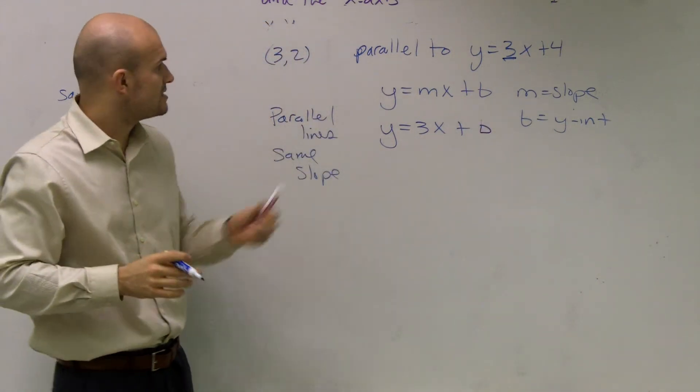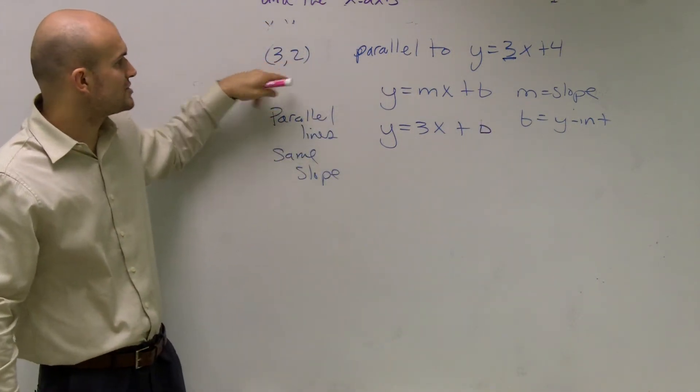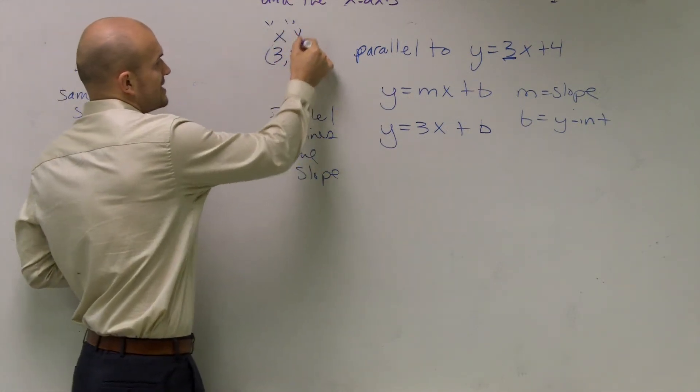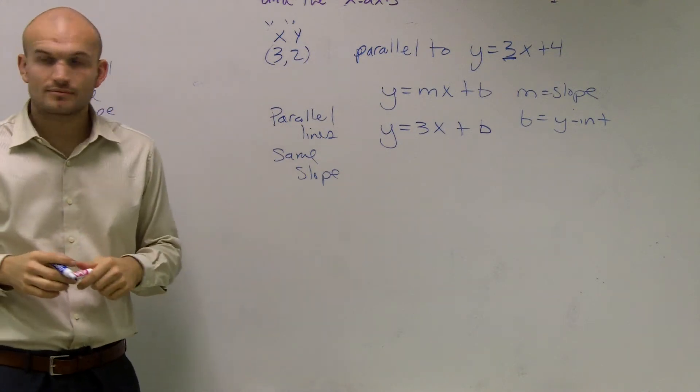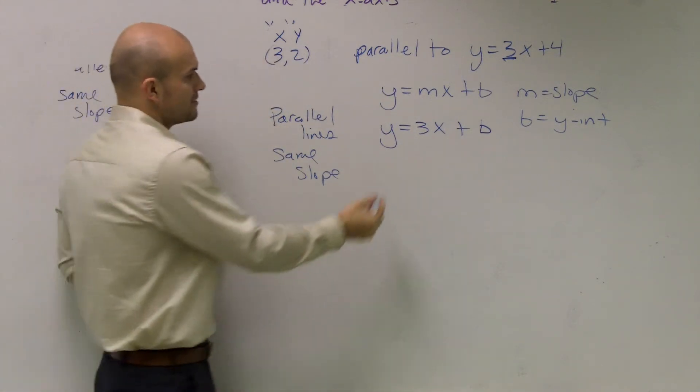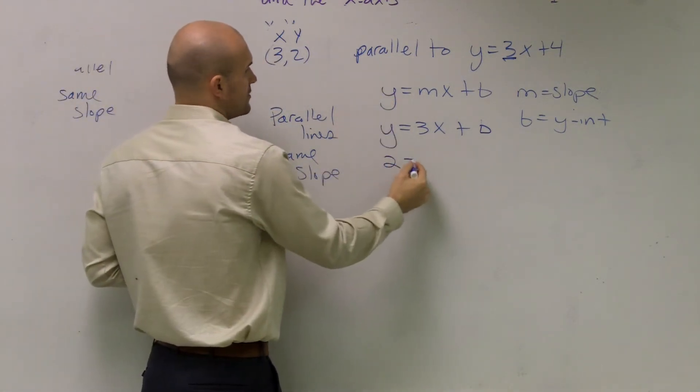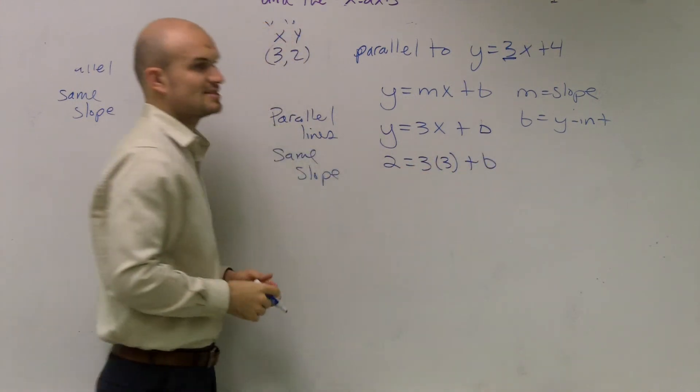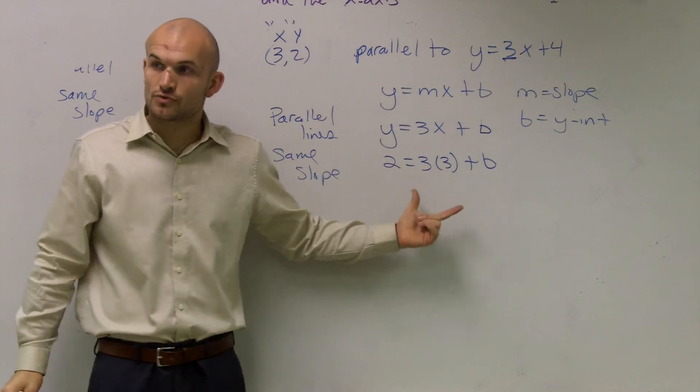And what I'm going to do is it says my new equation has to go through the point 3 comma 2. Well, remember, every point has an x and a y coordinate. So therefore, I can plug in y in for 2 and 3 in for x. So what that's saying is my new equation now is going to go through those two points.